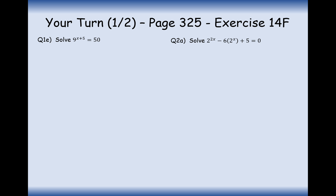So two pages of examples here — pause the video and have a go at the first page. For question 1, if we've got 9 to the power of x plus 5 equals 50, what's the opposite of 9 to the power of something? It's log of base 9. So we do log of base 9 to both sides — on the left we're back to x plus 5, and on the right we're at log base 9 of 50. Then we take away 5, so we get log base 9 of 50 minus 5.